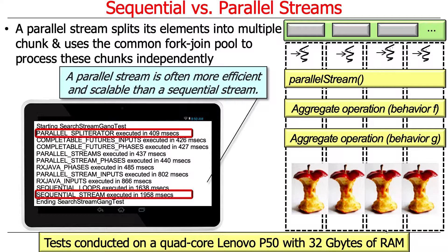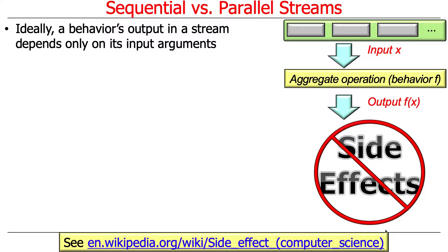Not every program is embarrassingly parallel like that one, but it's a good example of what you can often get if you know something about how your data works. When you write a program that uses parallel streams especially, you have to be very careful to make sure that the output of a behavior in a stream depends only on the input arguments to it without any side effects. Side effects are the root of all evil in parallel computation.